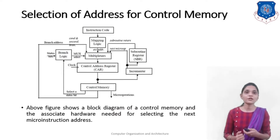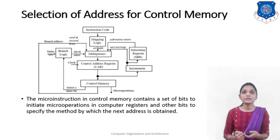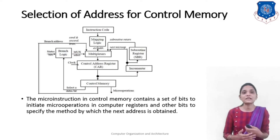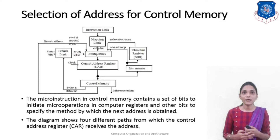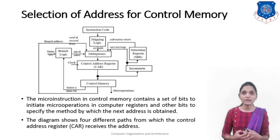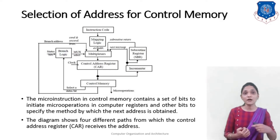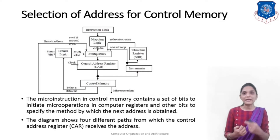This figure shows the block diagram of the control memory and the associated hardware needed for selecting the next micro instruction. The micro instruction contains bits to initiate micro operations and other bits to specify how the next address is obtained. There are four different paths through which the control address register can receive the address: from mapping logic, from the SBR, from address increment, or from a branching address.